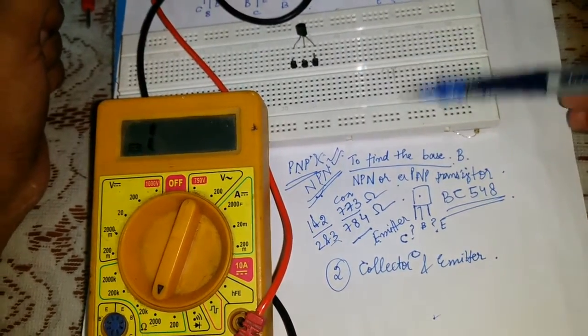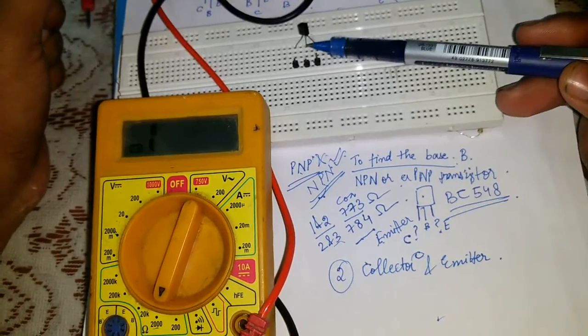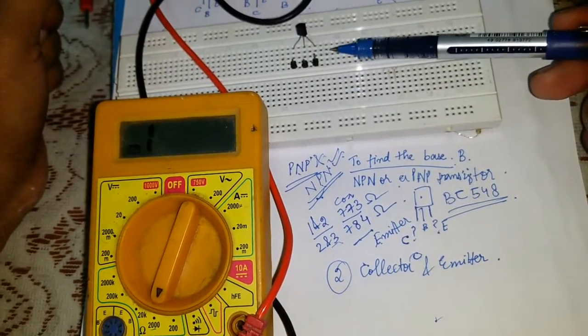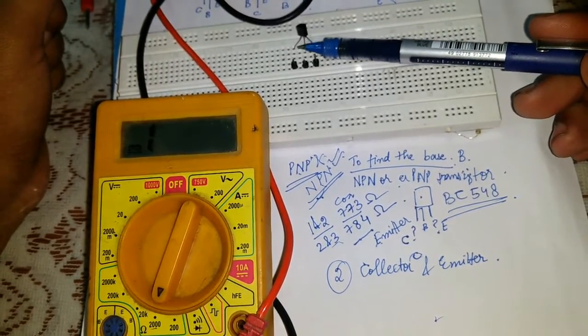Friends, this is a very easiest way or trick to find the collector, base, emitter of any transistor. For example, I have taken this BC 548 and if you Google it, you can find that this is collector, this is base, and this is emitter.